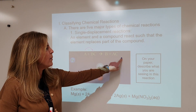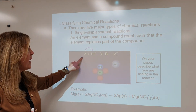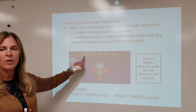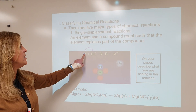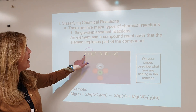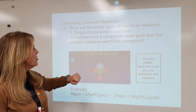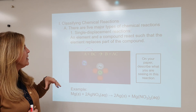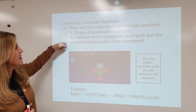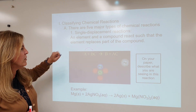We have an algebraic representation of this type of reaction. A by itself — think of that as an element — and BC, which is a compound. In a single displacement reaction, an element and a compound react such that the element replaces part of the compound.